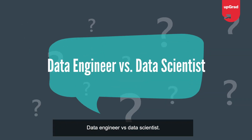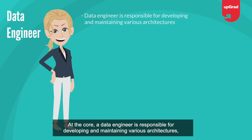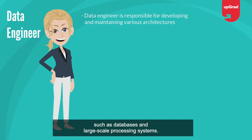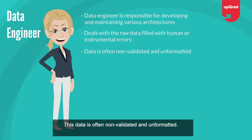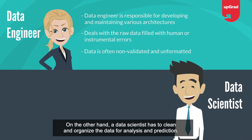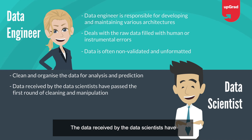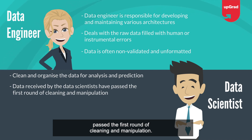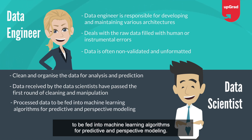For this transformation, they have to design, construct, install, test, and maintain scalable data management systems. At the core, a data engineer is responsible for developing and maintaining various architectures such as databases and large-scale processing systems, dealing with raw data filled with human or instrumental errors that is often non-validated and unformatted. A data scientist, on the other hand, cleans and organizes data that has already passed the first round of cleaning, then processes it to be fed into machine learning algorithms for predictive and prescriptive modeling.